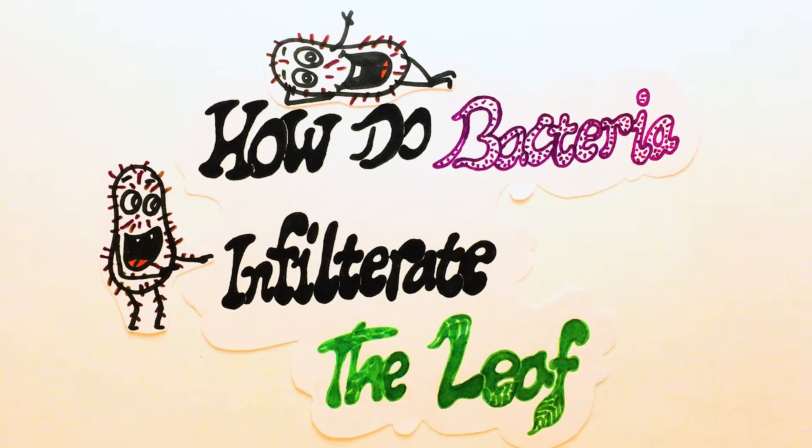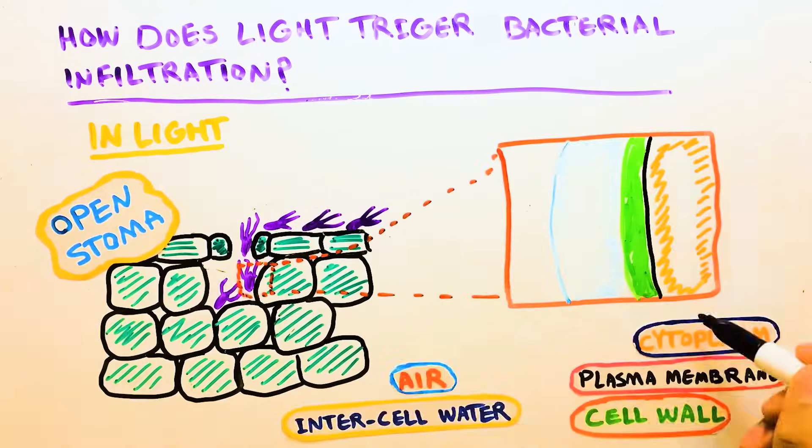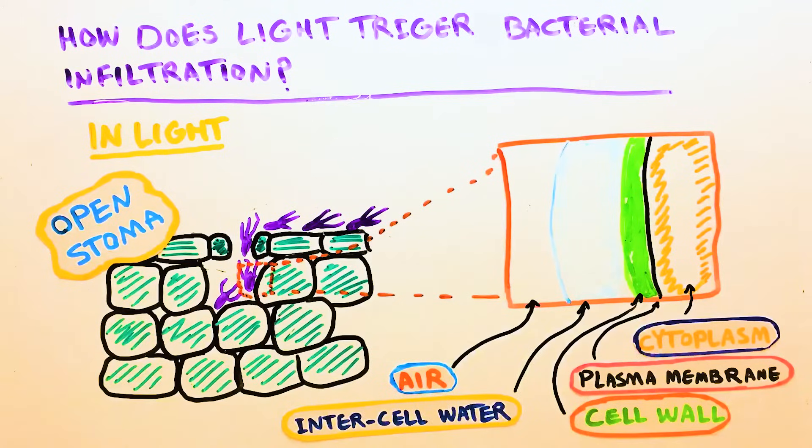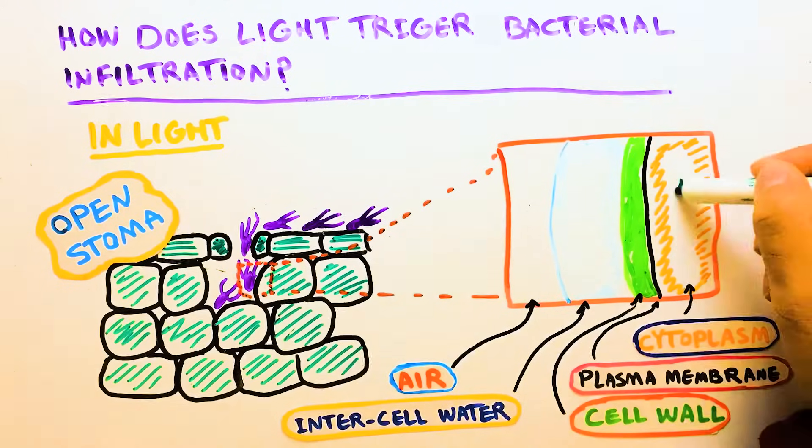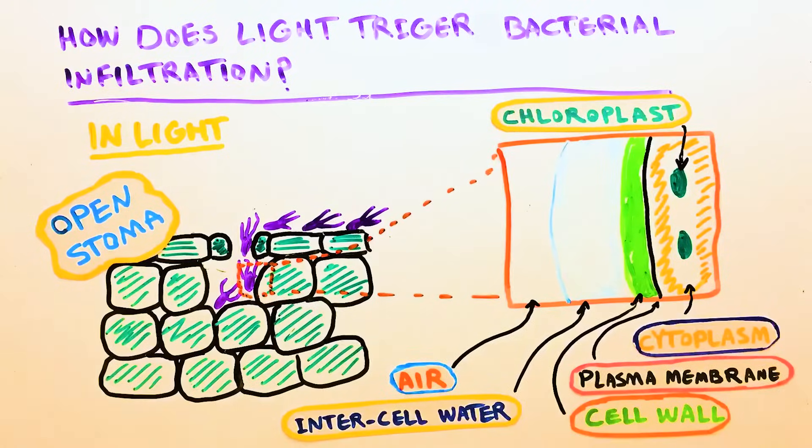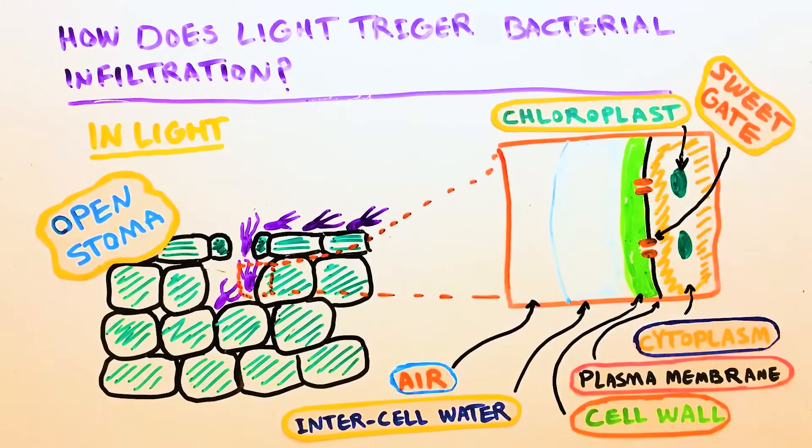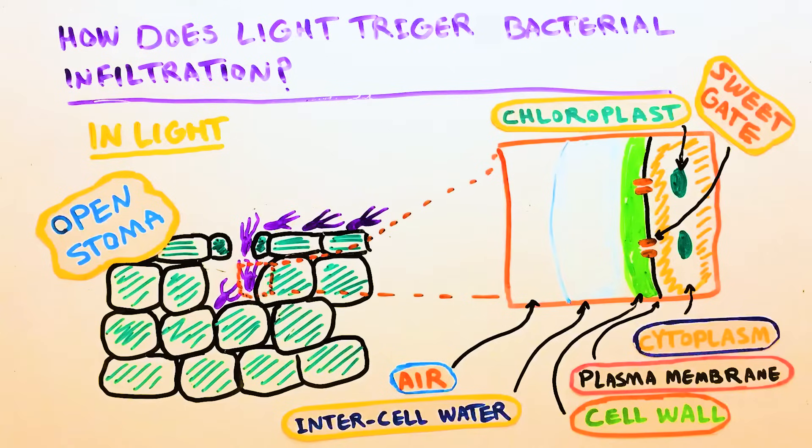So how do the bacteria actually infiltrate the leaf? Let's take a look at more details inside the leaf cross section focusing on cytoplasm, plasma membrane, cell wall and intercellular water. Inside the cytoplasm, chloroplasts are plants' machinery to run photosynthesis. On the plasma membrane, there exist special transporters called SWEETs that are responsible for exporting the synthesized sugar across plasma membrane.